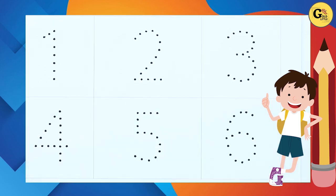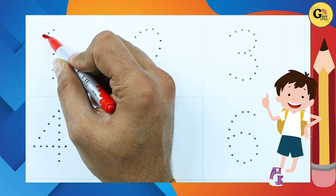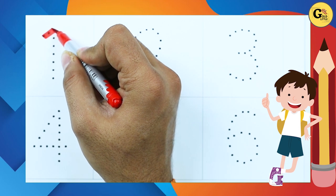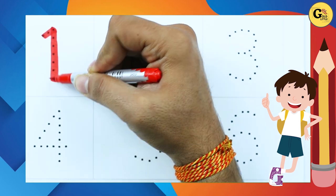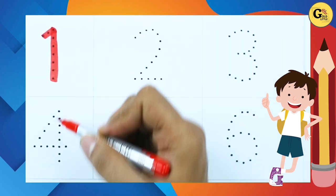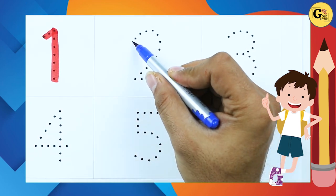Let's start! How to write numbers 1 to 10. It's number one, yes, number one with red color. Number two.